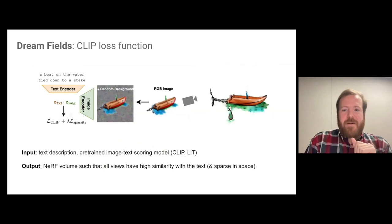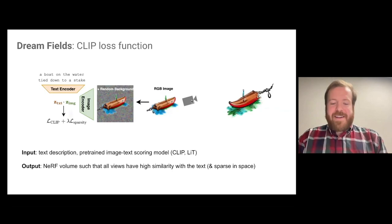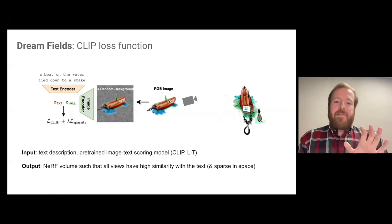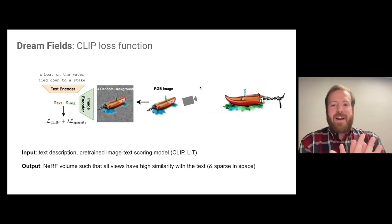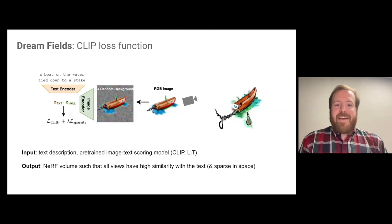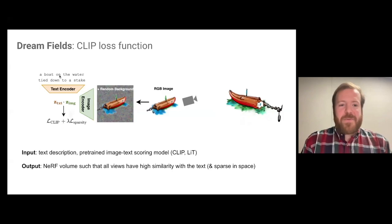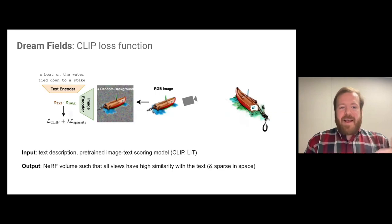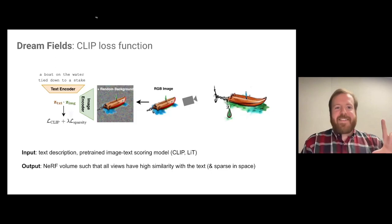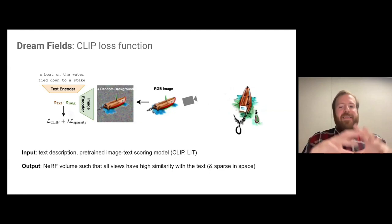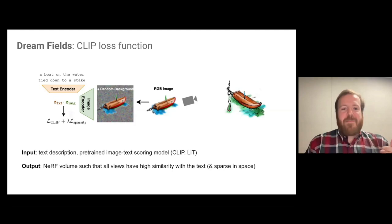In Dream Fields, we start with a 3D model, take a random rendering, augment it with a random background — which helps avoid artifacts like solid white objects — then feed it through the CLIP image encoder. We compute the inner product between the image embedding and the text embedding (e.g., 'a boat on the water tied to a stake'). We combine this with smoothness and occupancy regularization losses and optimize over thousands of steps.